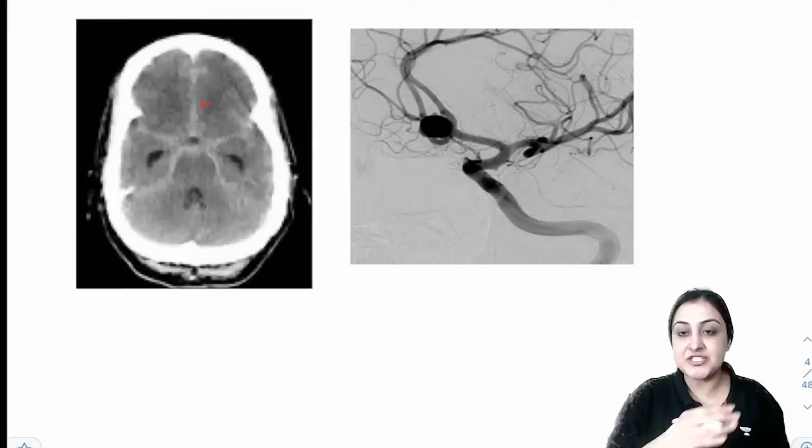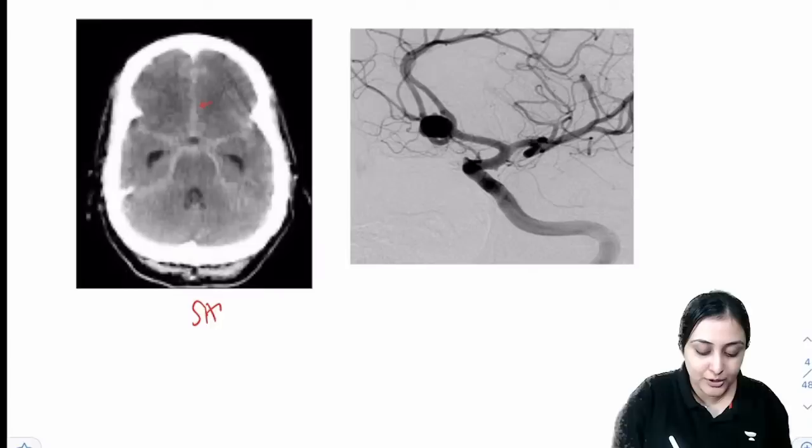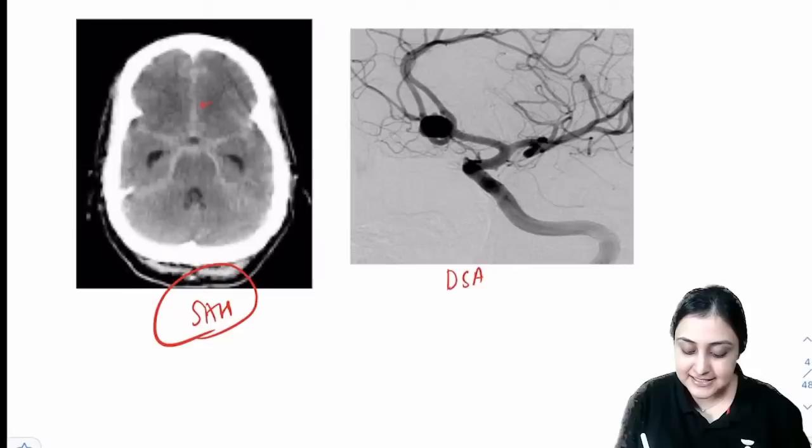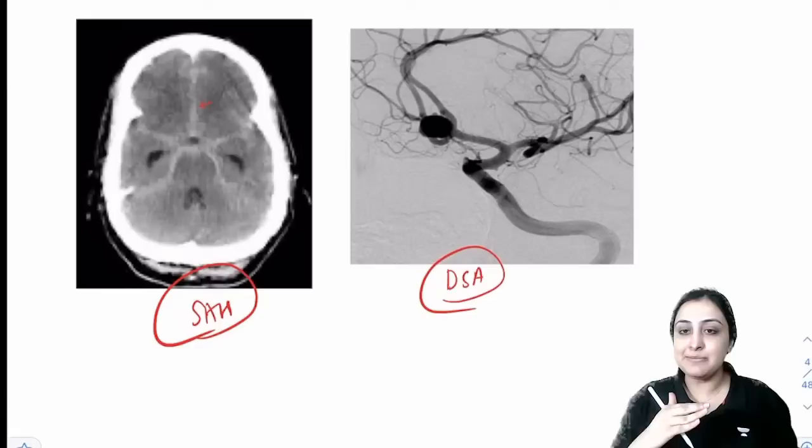Putaminal hemorrhage is the most common site of hypertensive hemorrhage. The responsible artery is the lenticulostriate branch of MCA, called Charcot's artery, which has micro-aneurysms called Charcot-Bouchard micro-aneurysms that rupture. On CT, subarachnoid hemorrhage appears white in a star shape in the basal cisterns. The most common cause of acute SAH is trauma, but for spontaneous SAH, the most common cause is aneurysm.